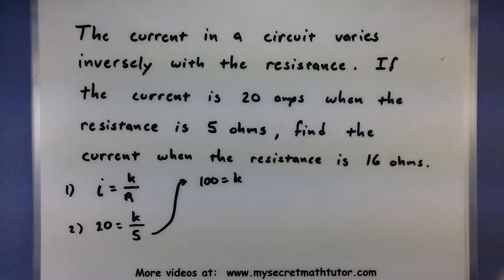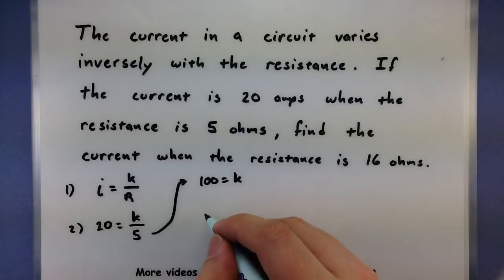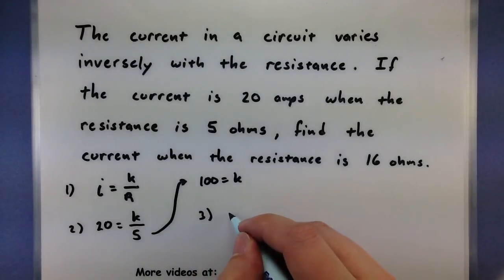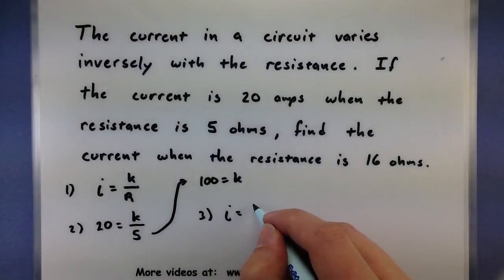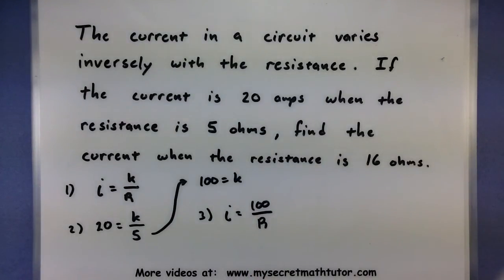So now we can actually write this into our original formula, giving us that I equals 100 over R. Now let's go ahead and finish this off. Find the current when the resistance is 16 ohms.